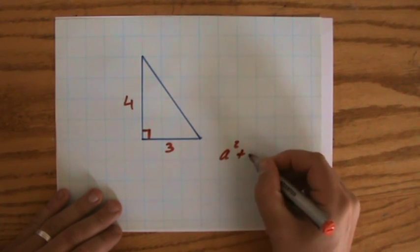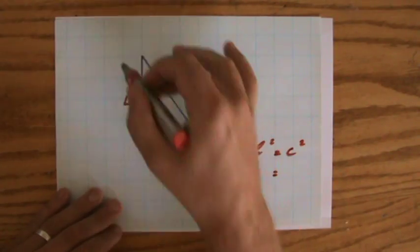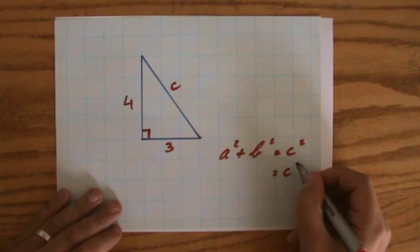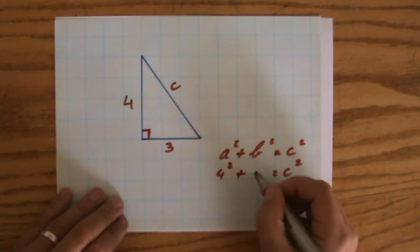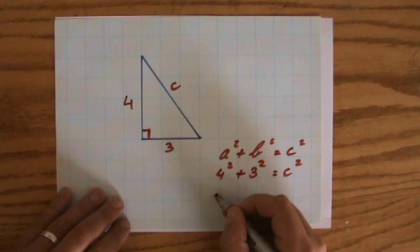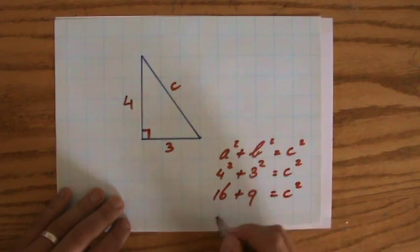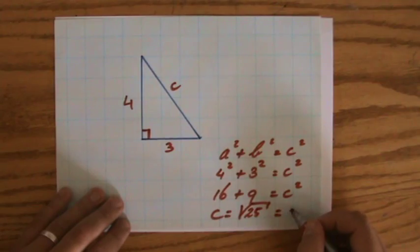So a squared plus b squared equals c squared. Now, I'm looking for my hypotenuse, so that's my c side, so just put it there, so 4 squared plus 3 squared equals c squared, 16 plus 9 equals c squared, so c would be the square root of 25 and 16 plus 9, which equals 5.